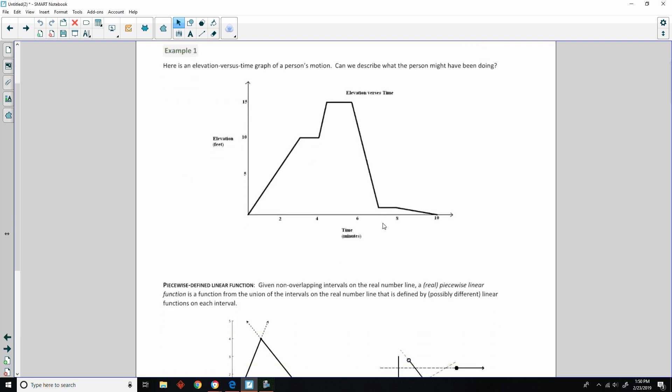And it says, here is an elevation versus time graph of a person's motion. Can we describe what the person might have been doing?